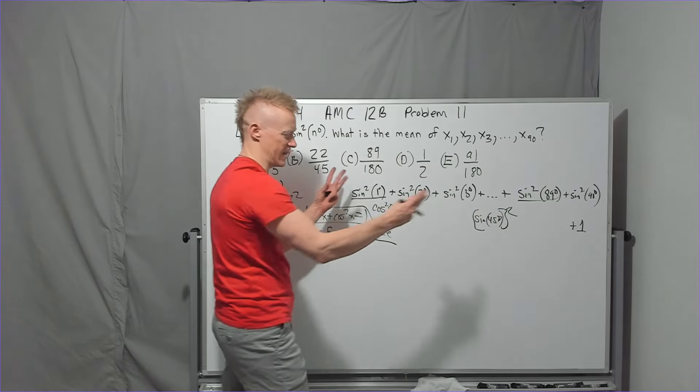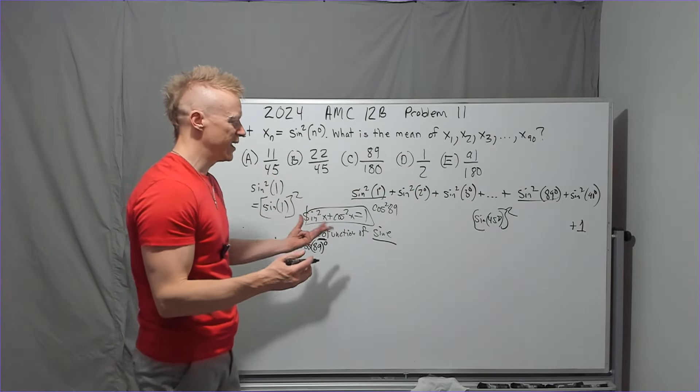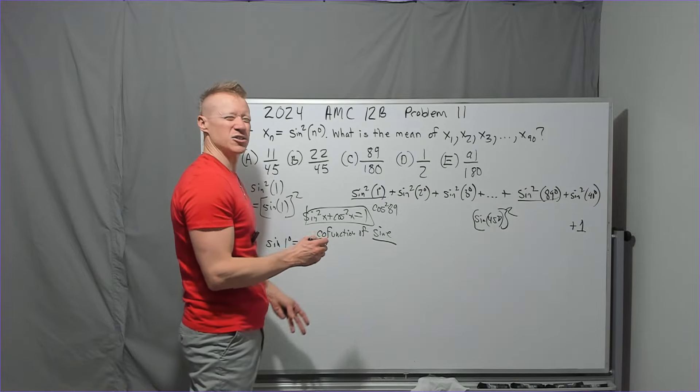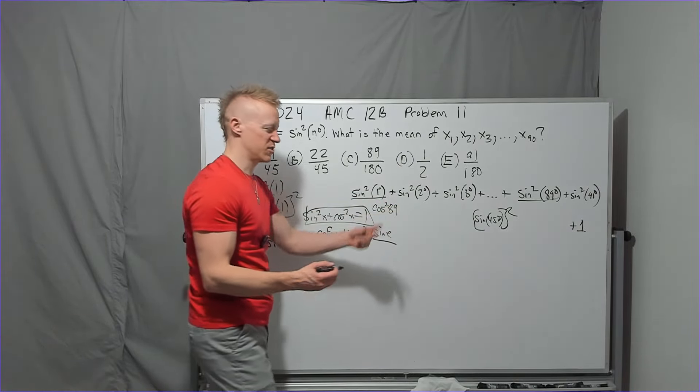Check it, 44 and 46. Yep, that's going to be fine. One will become a cosine, the other one is sine, and you'll have all those 1s. So how many 1s is that? Well, it's from 1 to 44, which is 44 ones.